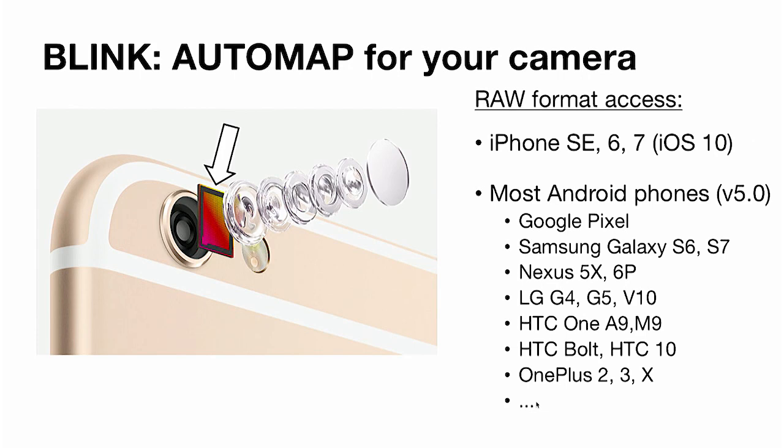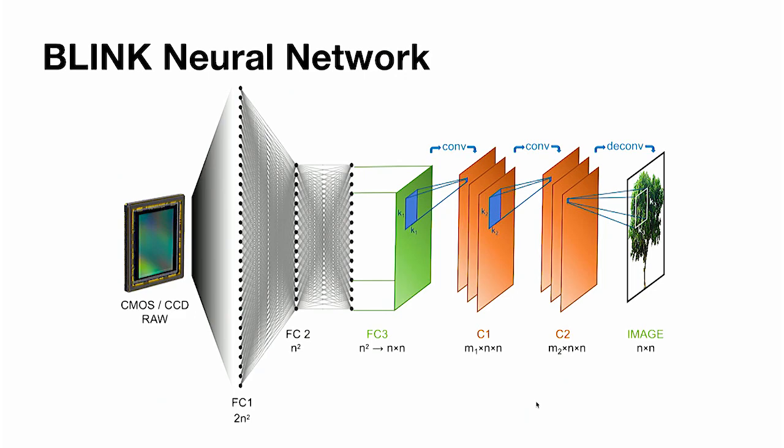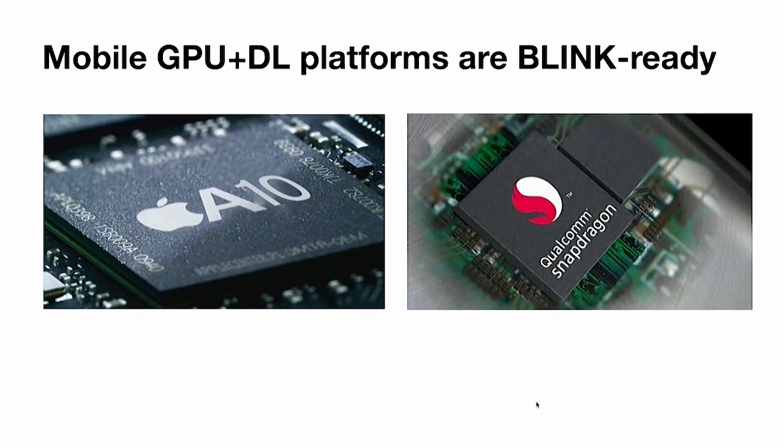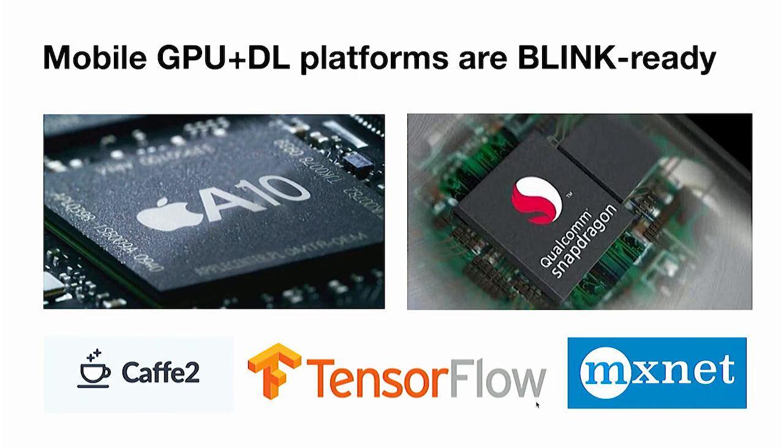The raw sensor data only recently — in the past year or so — has been made accessible by Apple and Google on all modern smartphones and their APIs. So instead of MRI sensor data, Blink processes your raw camera sensor data in an optimal way to generate the best final image or video. There's plenty of GPU horsepower to do all this on mobile — 300 gigaflops and above, more than what we would need for real-time rendering. Mobile deep learning frameworks are also readily available to deploy these neural networks on all smartphone devices.